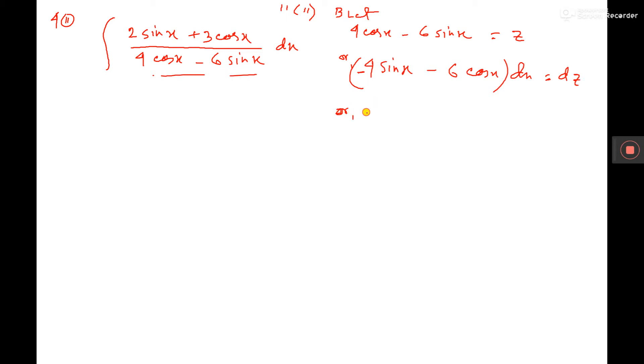Now, you take minus 2 common, then 2 sin x plus 3 cos x dx equal to dz.